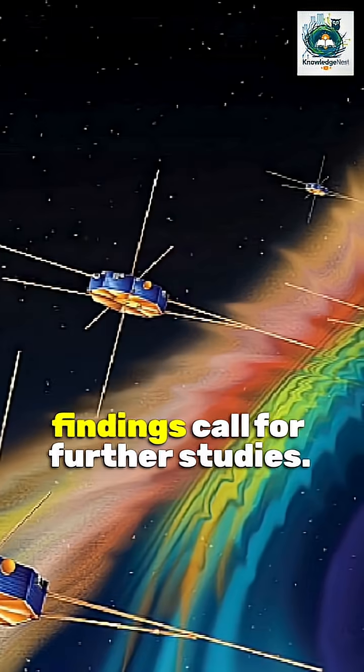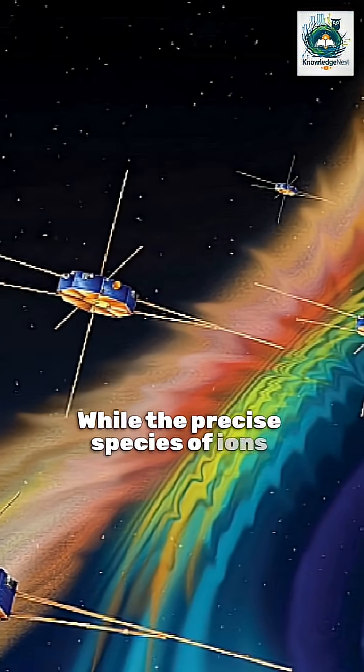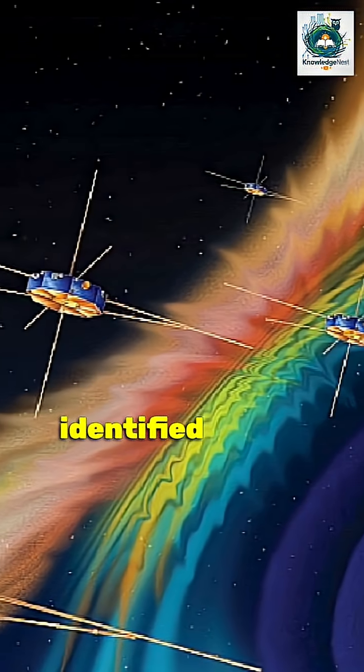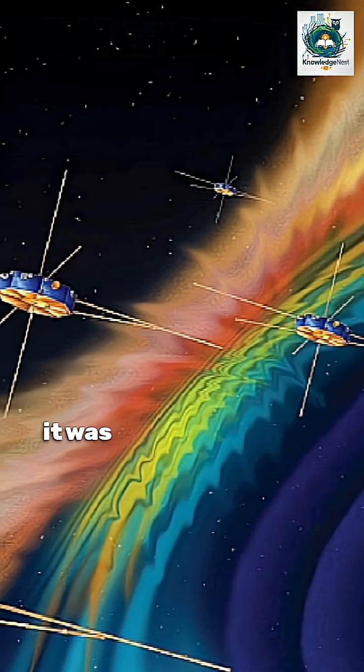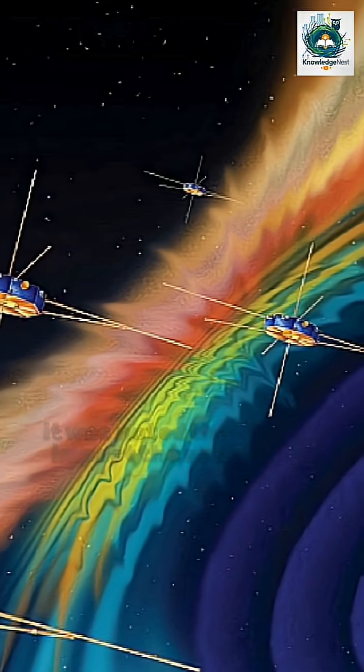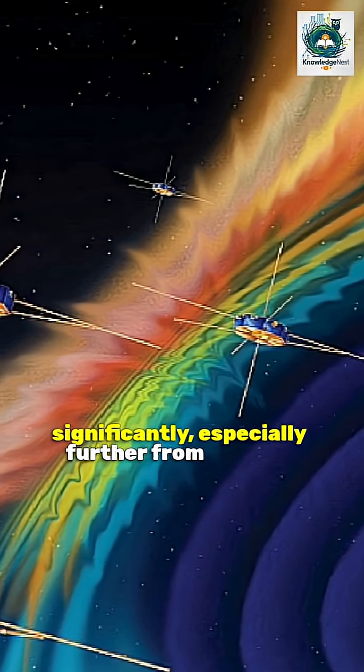The findings call for further studies. While the precise species of ions responsible for the waves couldn't be identified due to equipment limits, it was noted that PUIs could impact the solar wind significantly, especially further from the sun.